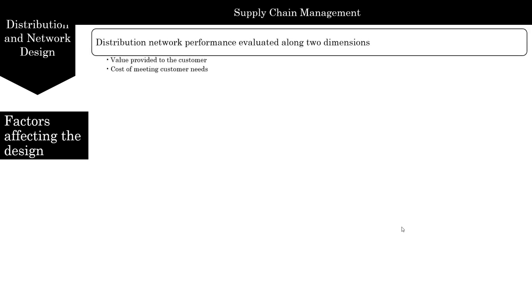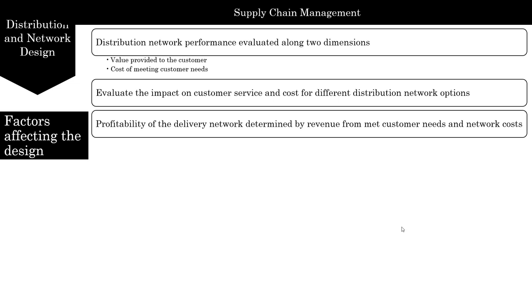Let's look at the factors influencing distribution network design. At the highest level, performance of a distribution network should be evaluated along the value it provides to a customer and the cost of meeting customer needs. A firm must evaluate the impact on customer service and cost as it compares different network options. The customer needs that are met influence the company's revenue, which along with cost decides the profitability of the delivery network.